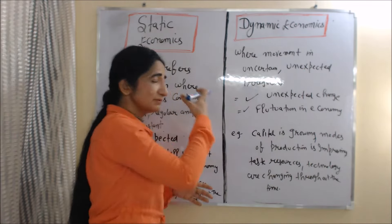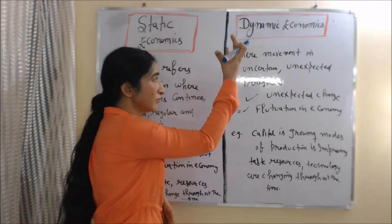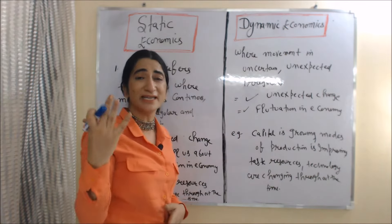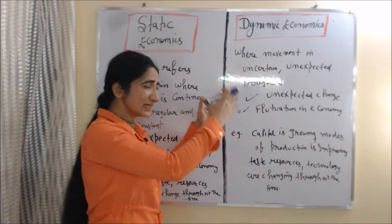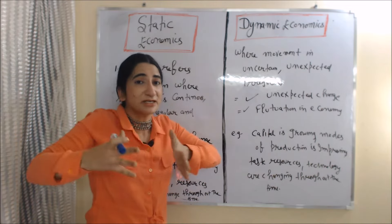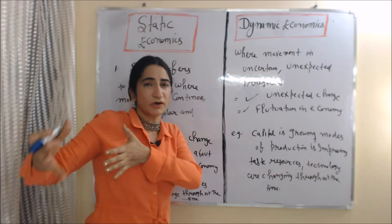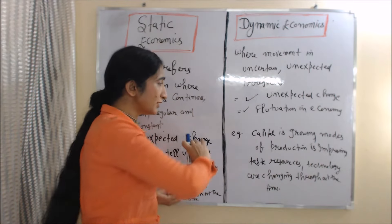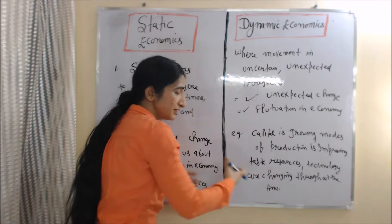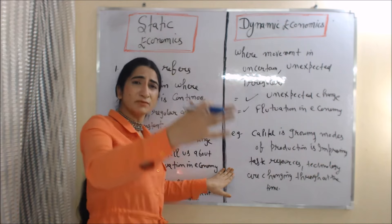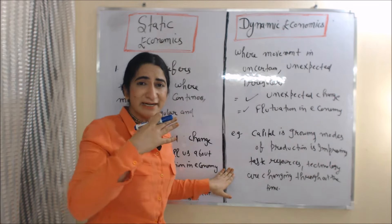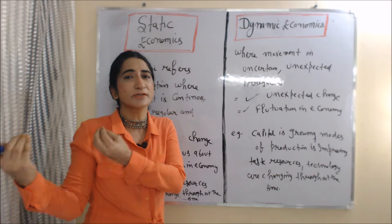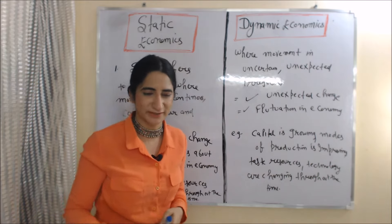On the other hand, dynamic economics is the situation where movement is uncertain, unexpected or irregular. Or we can say that dynamic economics deals with unexpected changes in the economy and tells us about fluctuations. For example, if in your economy capital is growing, production is improving, and taste, resources, and technology are changing throughout the time, it's called dynamic economics.